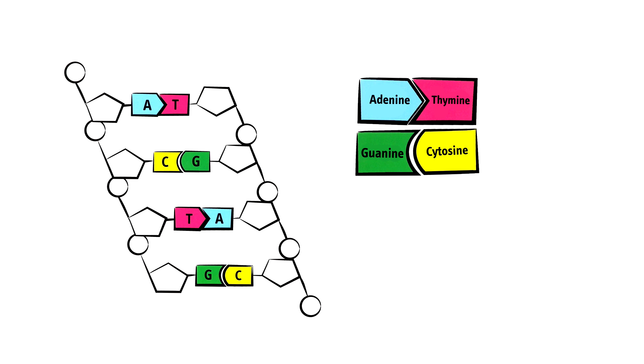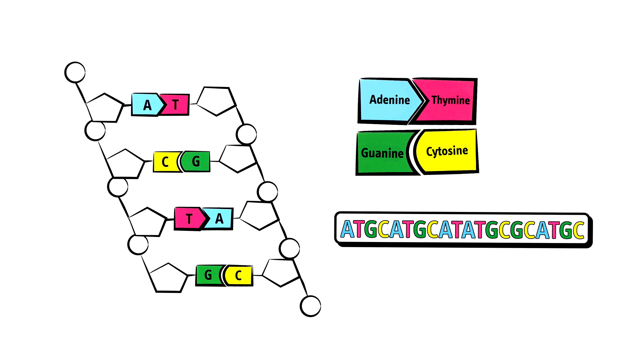The exact order of these bonds forms the code that stores the genetic information. A section of DNA that contains such information is called a gene. Humans have over 20,000 genes.